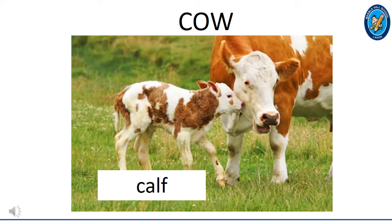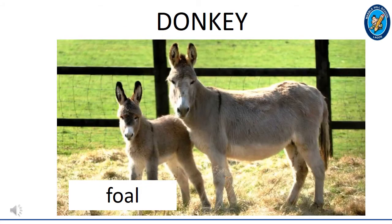This is a cow. The young one of a cow is called a calf. This is a donkey. The young one of a donkey is called a foal.